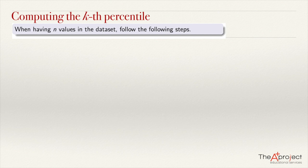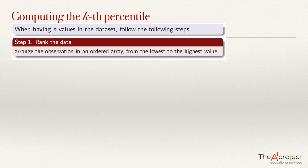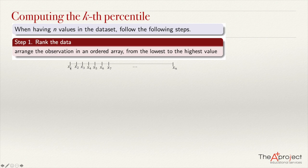We are going to follow three steps. The first step is to arrange the observations in an ordered array from the lowest value to the highest one. The data set will look like this: the smallest value is first, then x2, and so on until the highest value xn. The index on each value gives its position — this is the first position, the second position, etc.